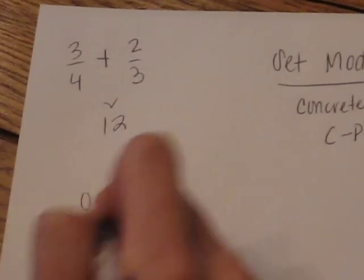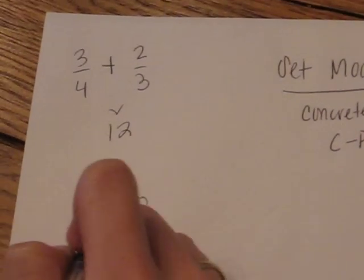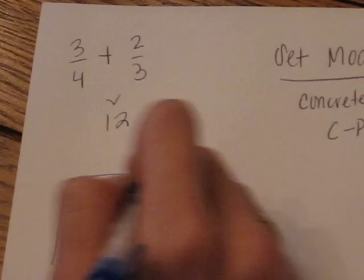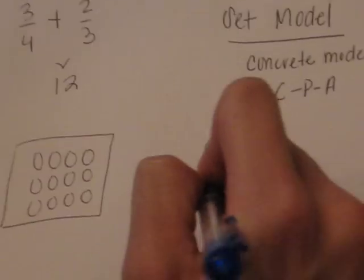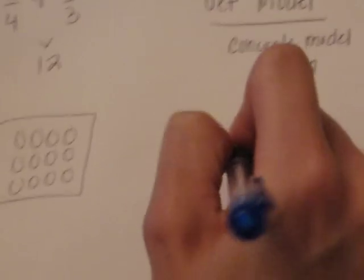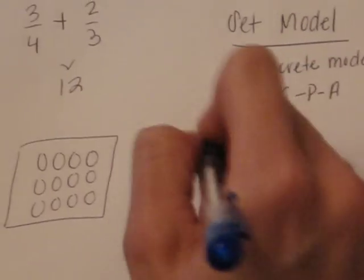So I'm going to do four columns and three rows. That's going to represent my one unit. Okay, and I'm going to do that again over here.